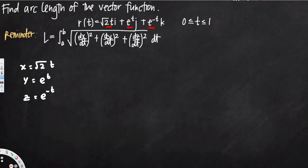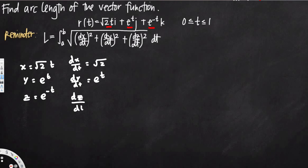We have to find the derivatives with respect to t. dx/dt is going to be just the square root of 2. dy/dt is going to be e to the power t. For dz/dt, we have a negative one in front, so we multiply that through — that's going to be negative e to the power negative t.